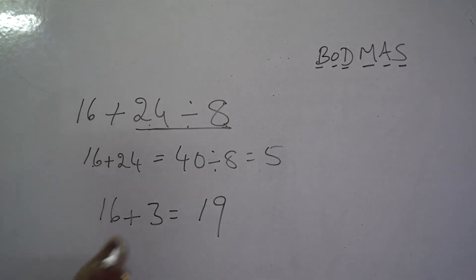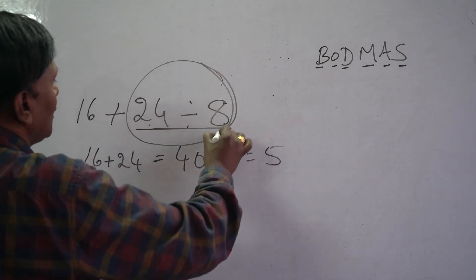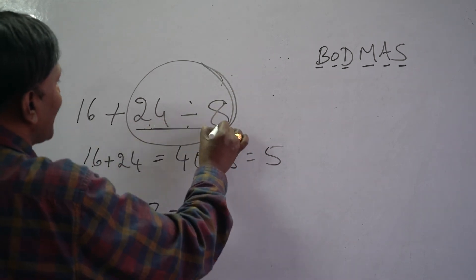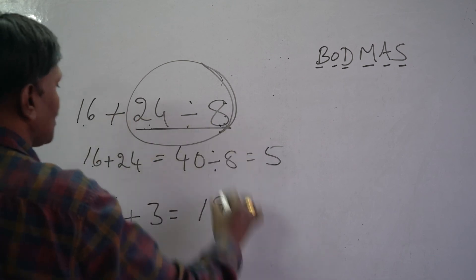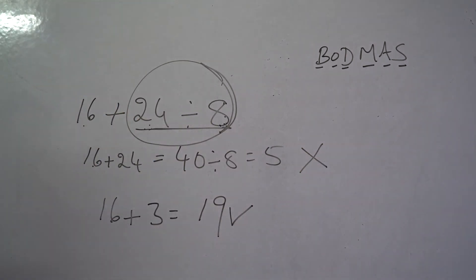So, which one is correct? We wrote the BODMAS. First we have to do this one. 24 upon 8 is 3. 16 plus 3 is 19. This is correct. This is wrong.